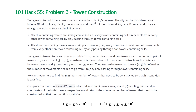The problem states Tang wants to build some new towers to strengthen his city's defense. The city can be considered as an infinite 2D grid. Initially his city has n towers and the i'th of them is in cell Xi Yi. From any cell one can only go towards the four cardinal directions. All cells containing towers are simply connected — meaning every tower-containing cell is reachable from every other tower-containing cell by only passing through tower-containing cells.